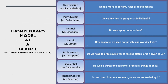Let's look at the Trompenaars model. Universalism vs. Particularism — what is more important, rules or relationships? Individualism vs. Collectivism — do we function in a group or as individuals? Neutral vs. Emotional — do we display our emotions? Specific vs. Diffuse — how separate do we keep our private and working lives? Achievement vs. Ascription — do we have to prove ourselves to receive status, or is it given to us? Sequential vs. Synchronic — do we do things one at a time or several things at once? Internal control vs. External control — do we control our environment or are we controlled by it?